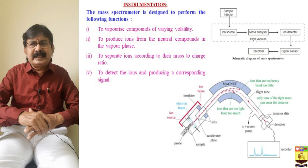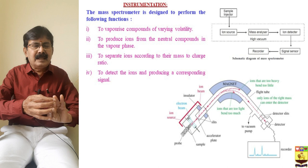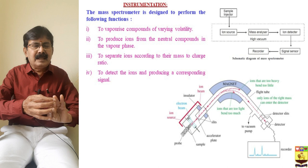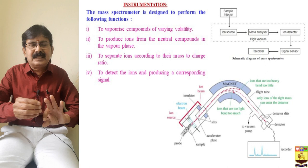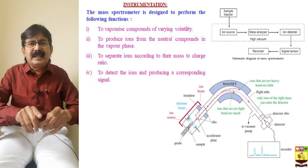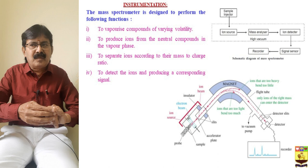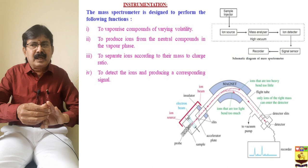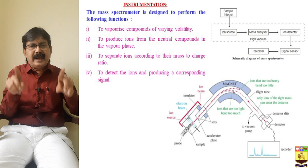The mass spectrometer is designed to perform the following functions: first, the sample injector; then the ion source; and the mass analyzer cell, which is at high vacuum; followed by the ion detector, amplifier, and recorder. The first function is to vaporize compounds of varying volatility and to produce ions from neutral compounds in the vapor phase, to separate the ions according to their mass-to-charge ratio, and to detect the ions producing corresponding signals.